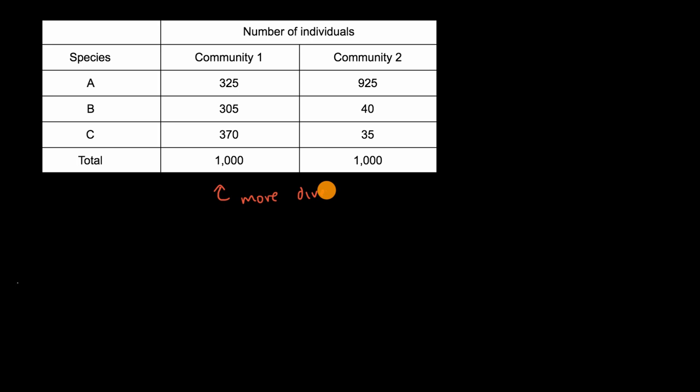But this was just on my intuition or our intuition, and the numbers are pretty clear here. It's evenly distributed amongst the species here, and here it's very heavily weighted on species A. But it might not always be this clear. So it'd be useful to have some type of quantitative way to measure the diversity of a population.